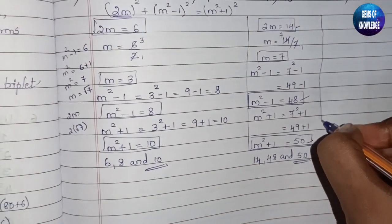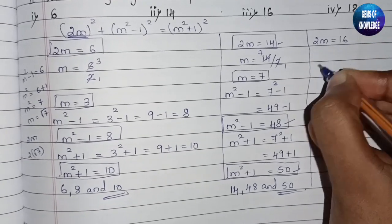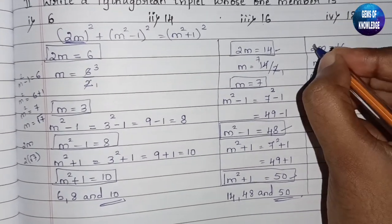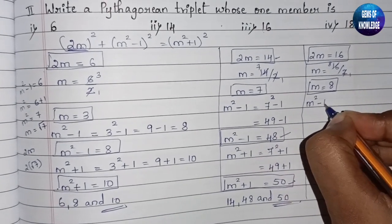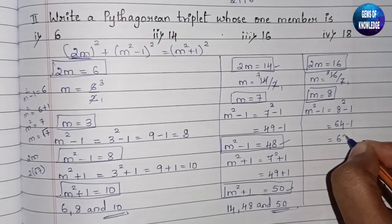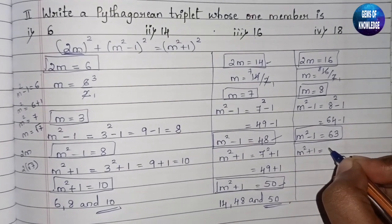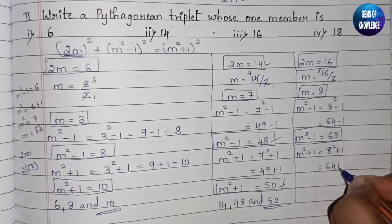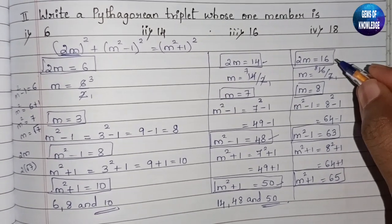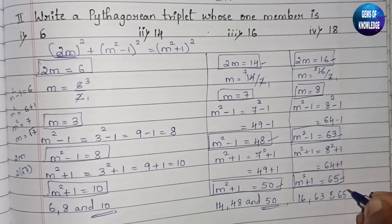For member 16: we consider 2m = 16, so m = 8. Then m²-1 = 64-1 = 63, and m²+1 = 64+1 = 65. So the Pythagorean triplet is 16, 63, and 65.